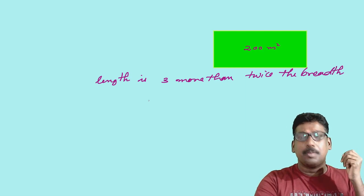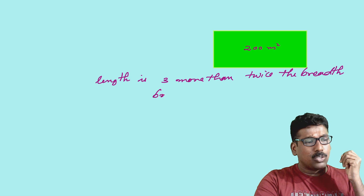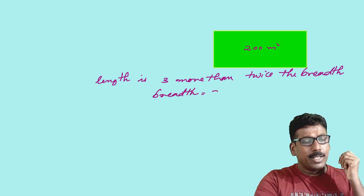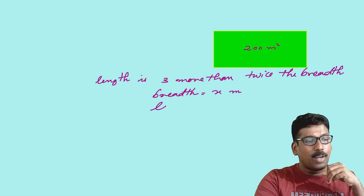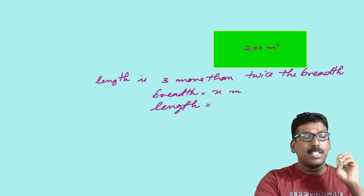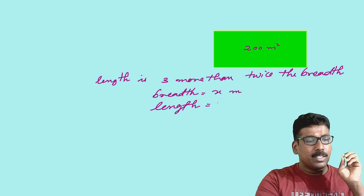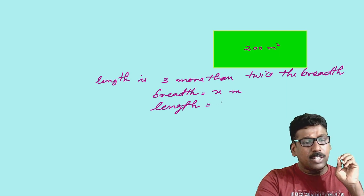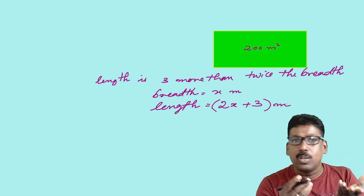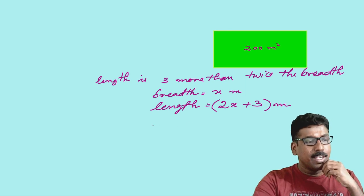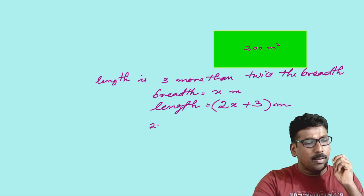Since we don't know the breadth, let breadth be equal to x meters. Then can you say what is the length? Length is 3 more than twice its breadth. That means you can write it as 2x, and 3 more than twice means 2x plus 3. So you know length and breadth — then how can you calculate its area? Area is equal to length into breadth, that is (2x + 3) into x.